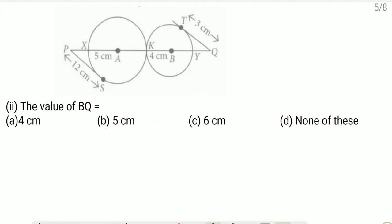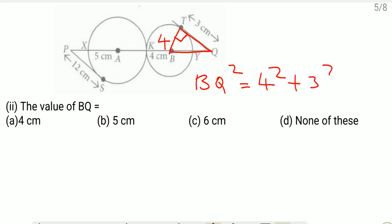For the second question, find BQ: joining the radius BT perpendicular to tangent TQ, we use Pythagoras theorem. BQ² equals 4² plus 3² equals 16 plus 9 equals 25, so BQ equals 5 cm. This is also recognized as the 3-4-5 Pythagorean triplet. Option is correct.